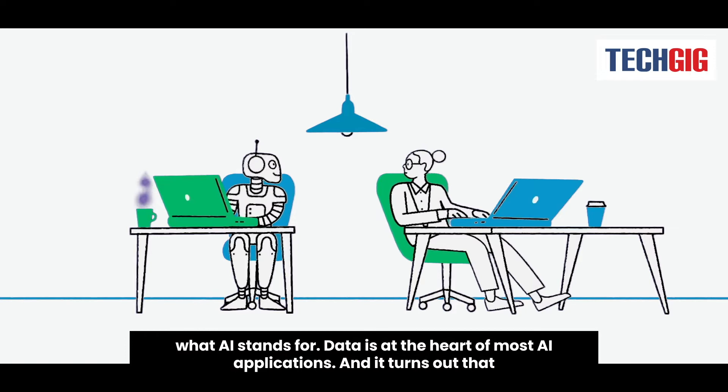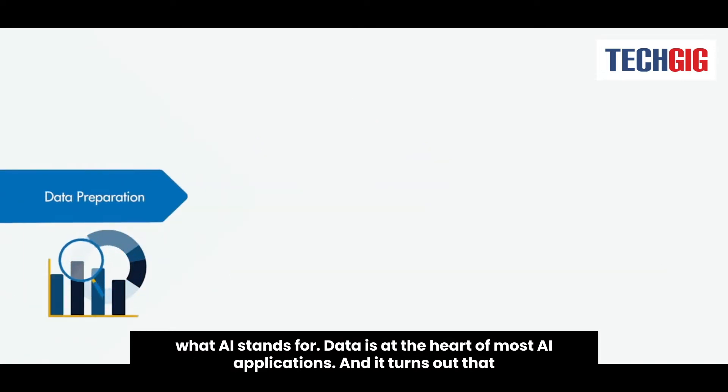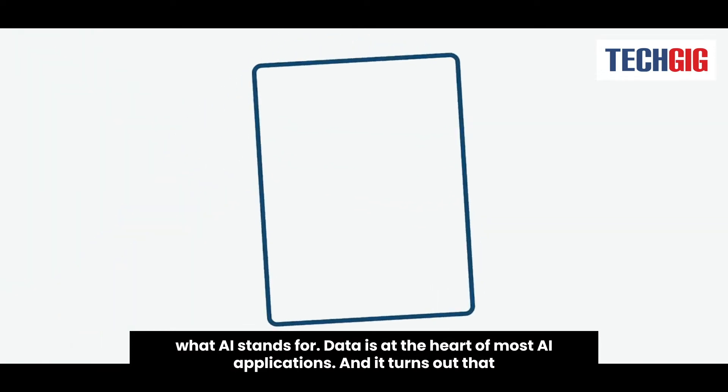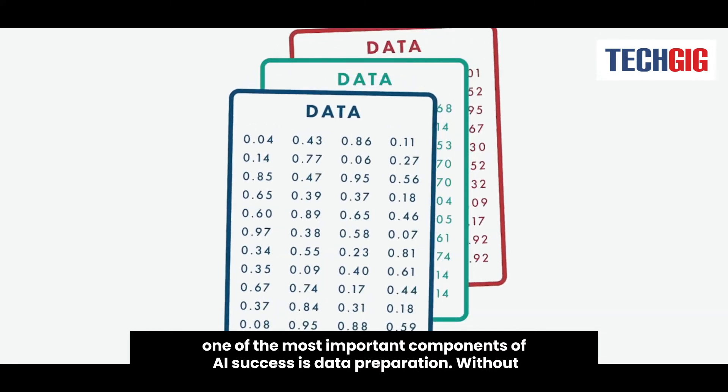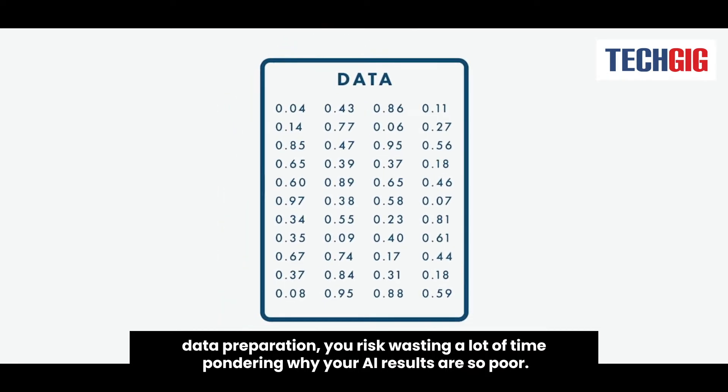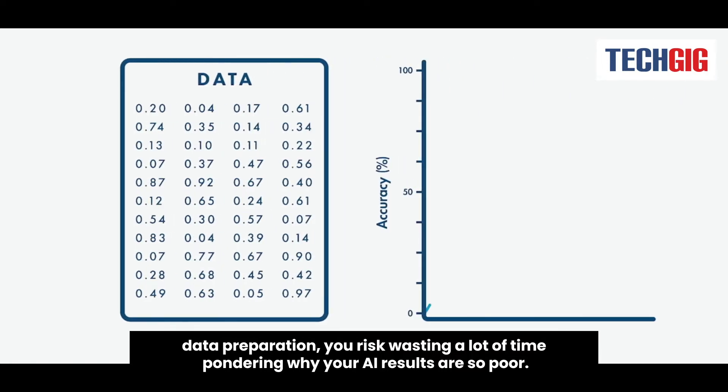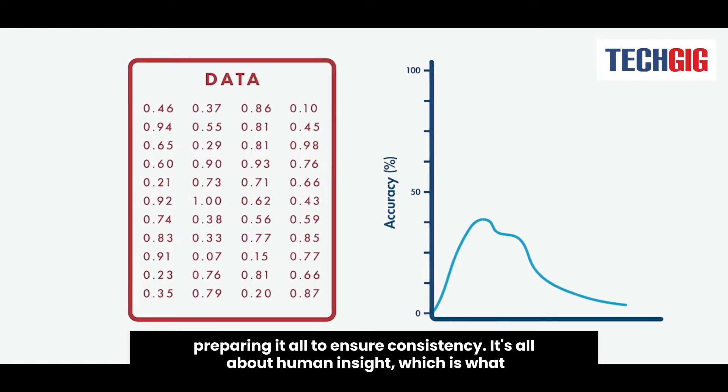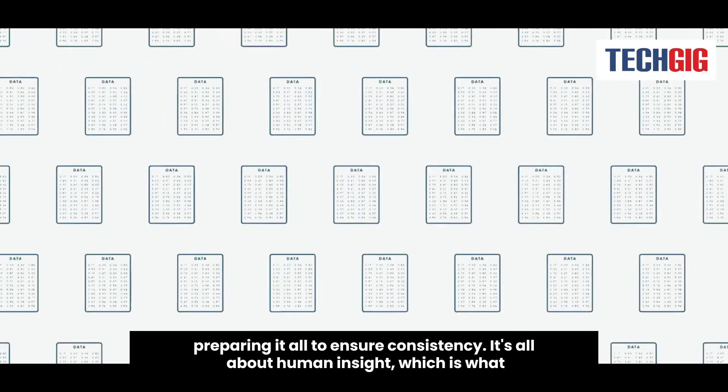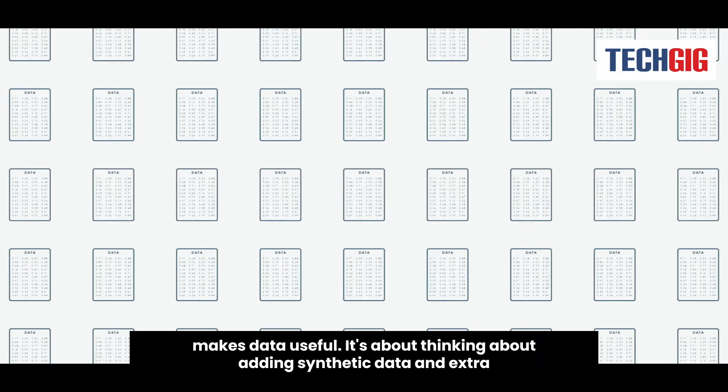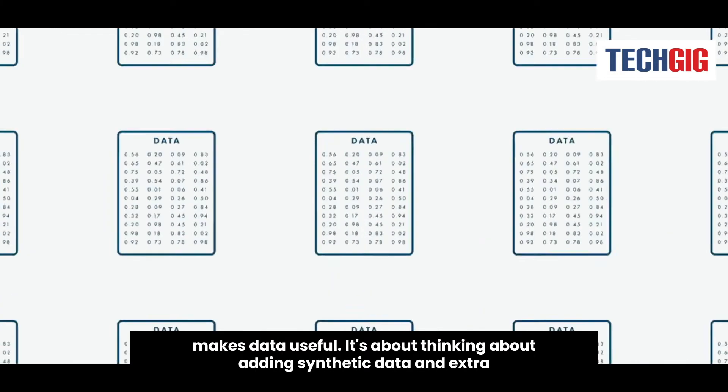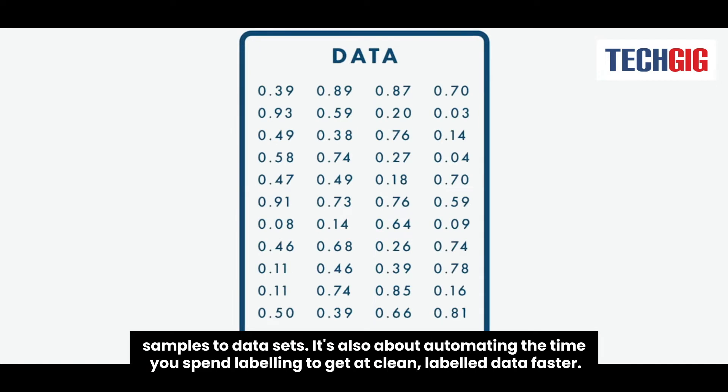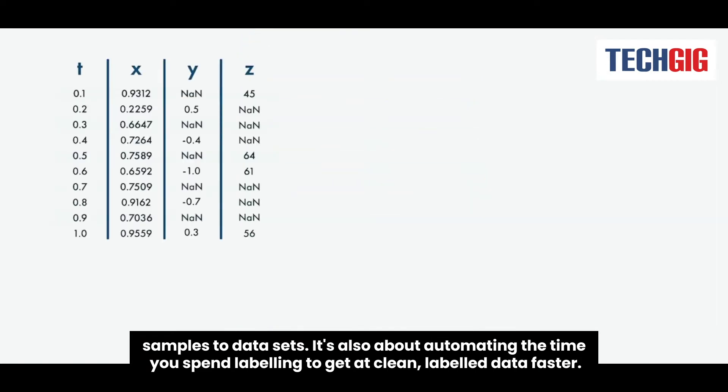Data preparation is what AI stands for. Data is at the heart of most AI applications, and it turns out that one of the most important components of AI success is data preparation. Without it, you risk wasting a lot of time pondering why your AI results are so poor. Data preparation entails more than just having a large amount of data or ensuring consistency. It's all about human insight, which is what makes data useful. It's about adding synthetic data and extra samples to datasets, and automating the time you spend labeling to get clean, labeled data faster.